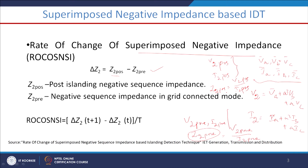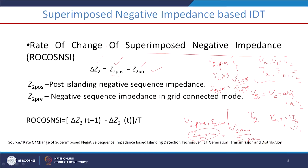After getting Z2_post (after the disturbance) and Z2_pre (before the disturbance), the difference between these two impedances is known as the superimposed negative sequence impedance. The superimposed term means the difference between the post quantity and the pre quantity — that is, superimposed parameter = post parameter minus pre parameter.